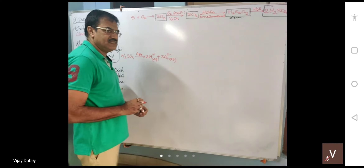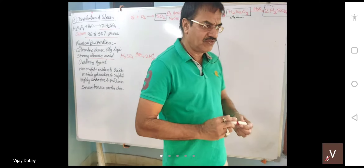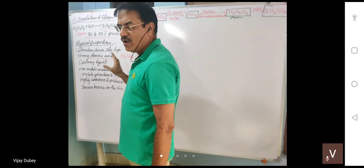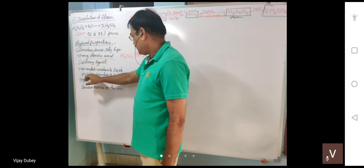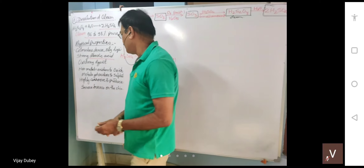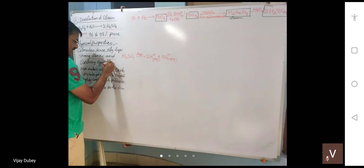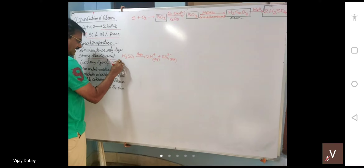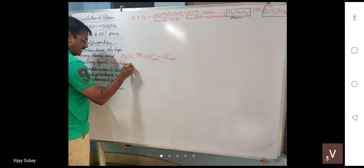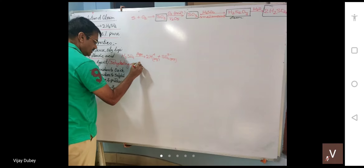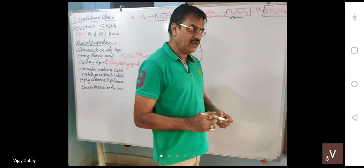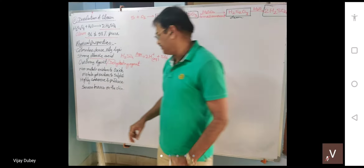Sulfuric acid is a very strong oxidizing agent. It is also a very important dehydrating agent — we have read about dehydration reactions in the context of alcohols, where sulfuric acid is used as a dehydrating agent.